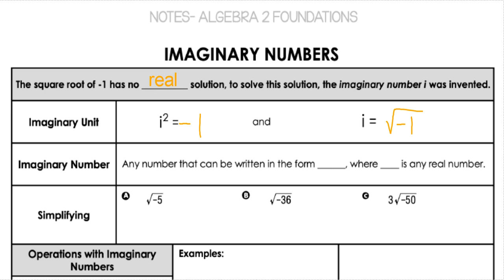So an imaginary number is any number that can be written in the form ai — a number times i — where a is any real number.